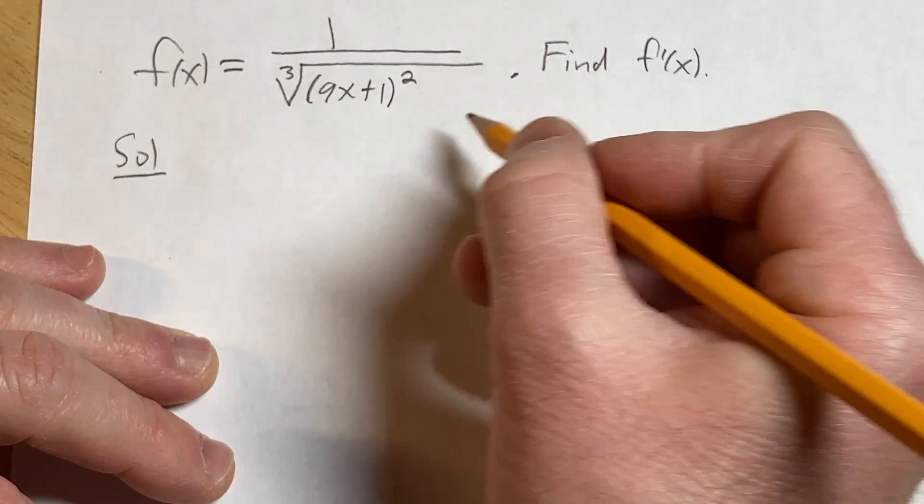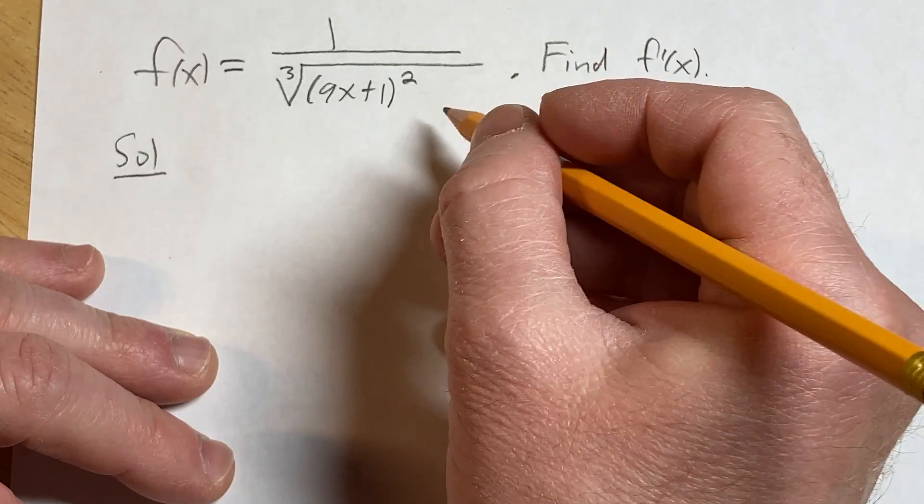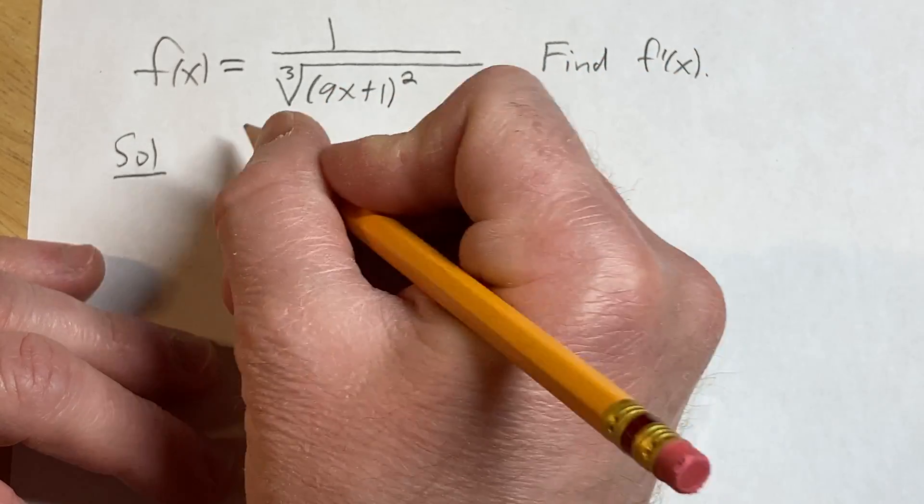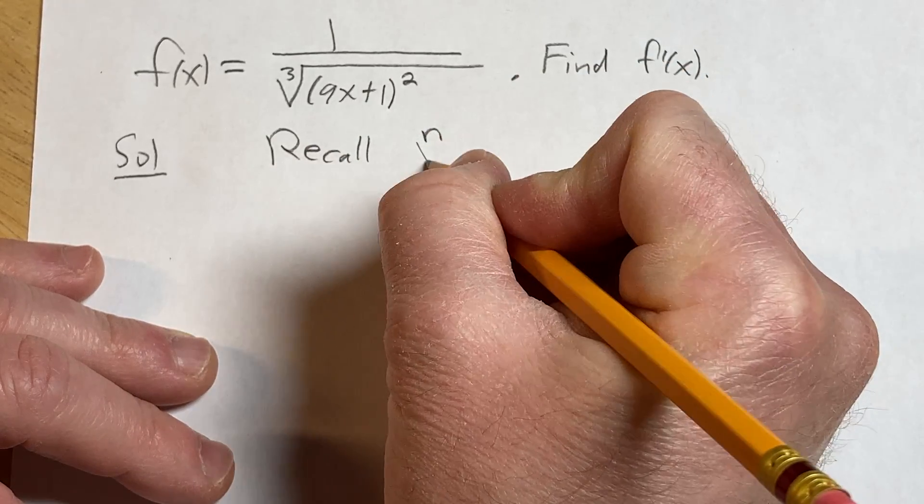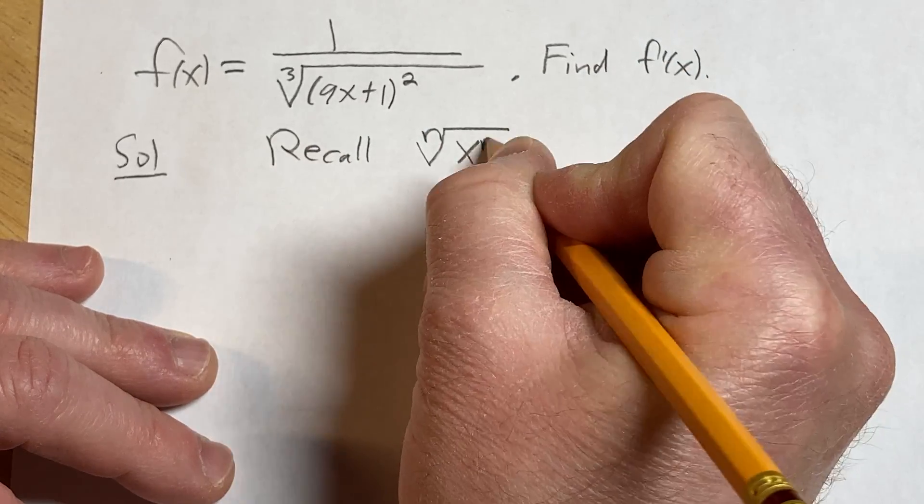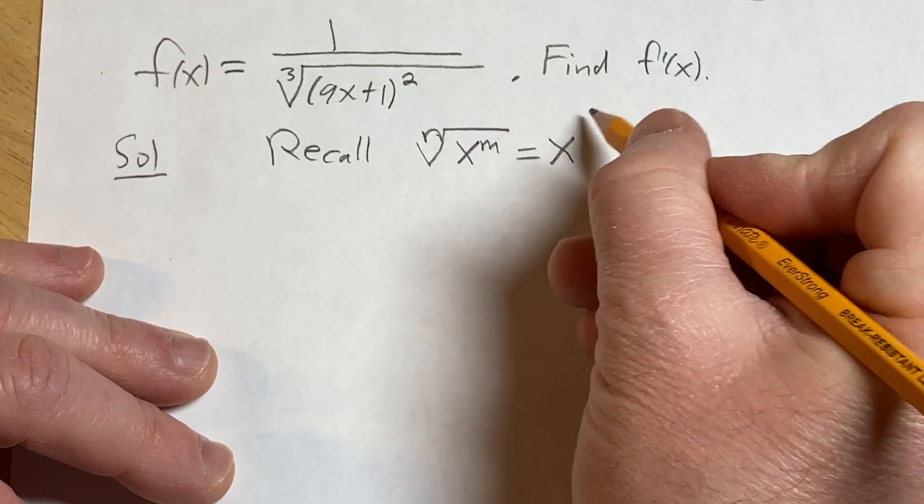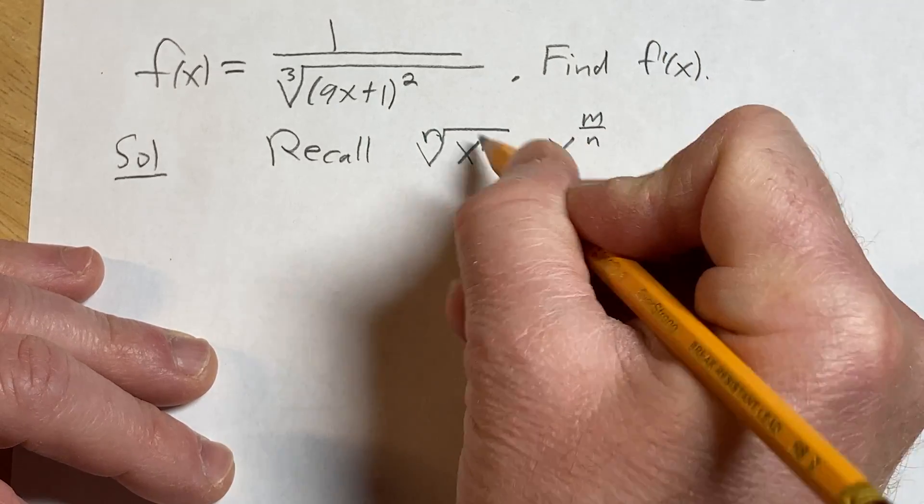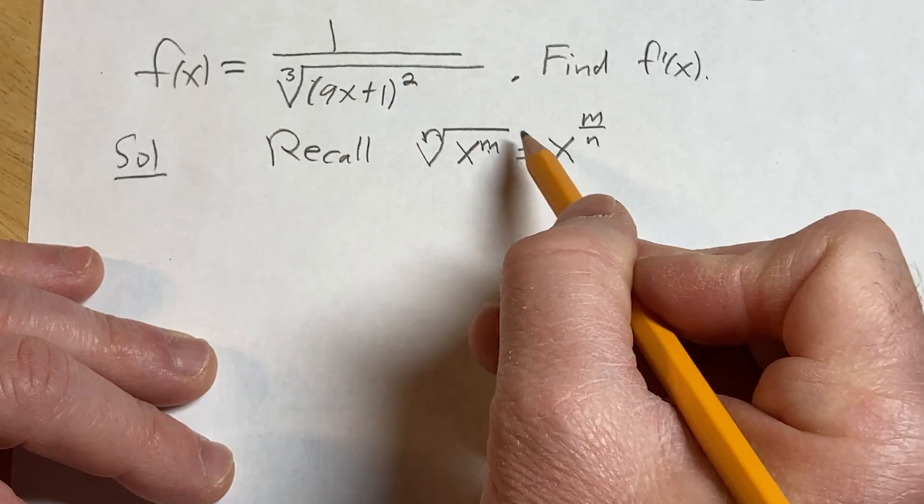Solution. We're going to use a property of exponents that you might not be super familiar with. Recall: the nth root of x to the m equals x to the m over n. So here it's going to be 2 over 3, m over n.